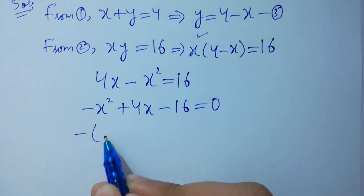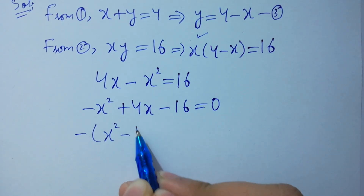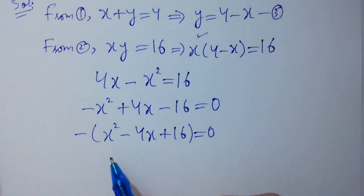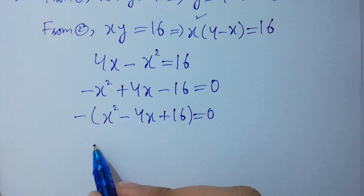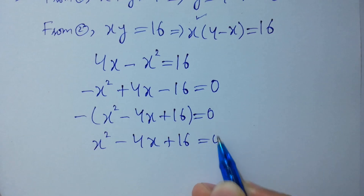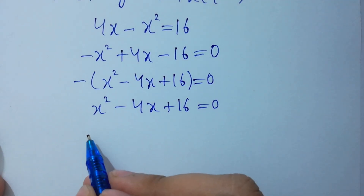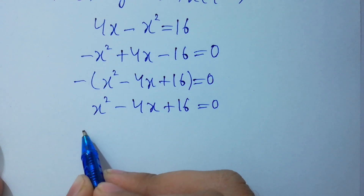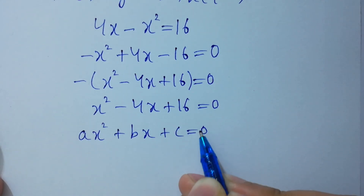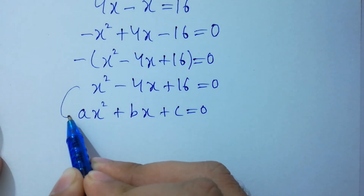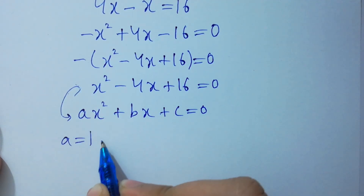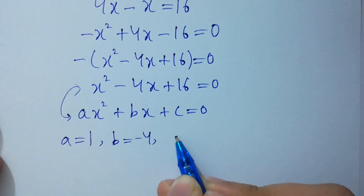Taking out the common factor of minus 1, we get x squared minus 4x plus 16 equal to 0. Multiplying both sides by minus 1: x squared minus 4x plus 16 equal to 0. This equation is in the form of a quadratic equation: a x squared plus b x plus c equal to 0. By comparing, a equal to 1, b equal to minus 4, c equal to 16.